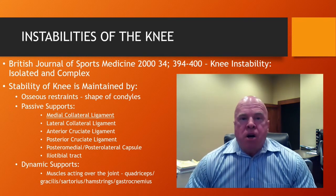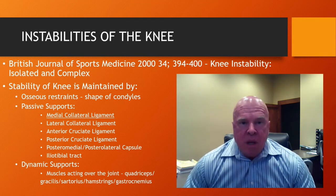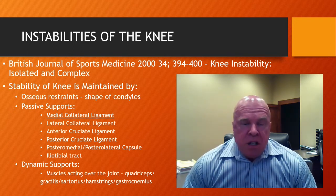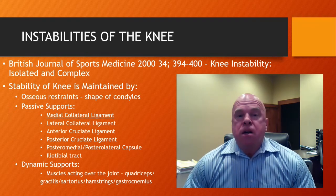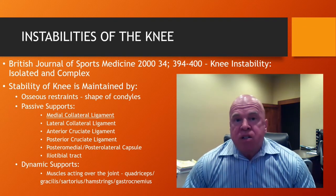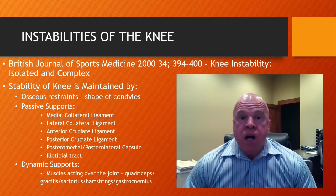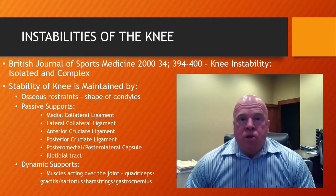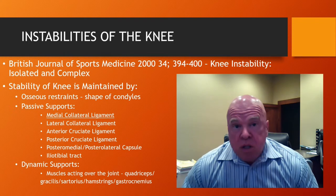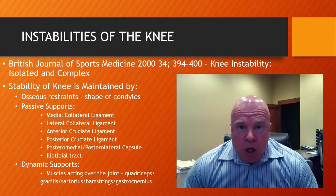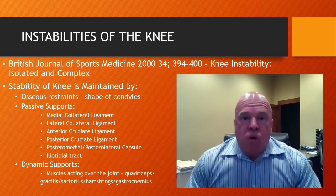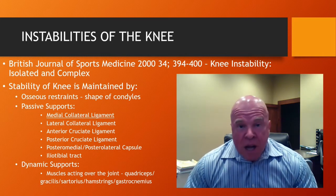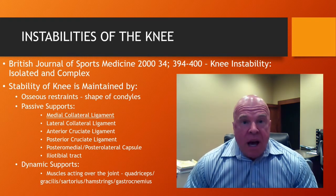So let's talk briefly about the knee. The stability of the knee is maintained by several structures. The osseous restraints of the knee are weak and shallow. They are based upon the shapes of the femoral condyles — the medial and lateral femoral condyles — and the tibial plateaus, medial and lateral. Because the femoral condyle to the tibial plateaus represents shallow joint surfaces, there's not a lot of osseous restraint provided by the osseous structures themselves.